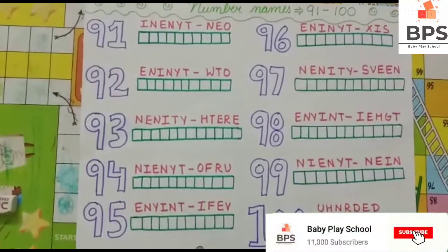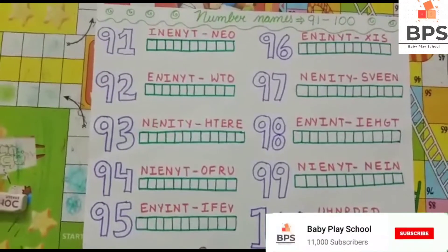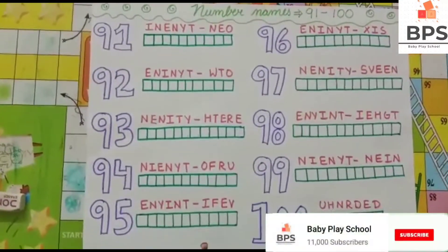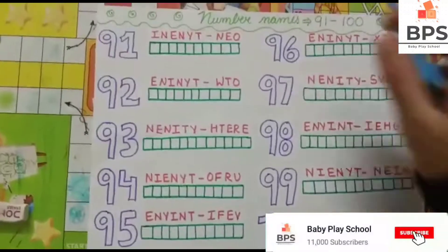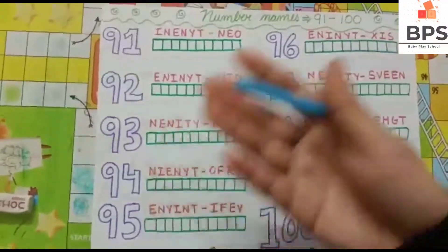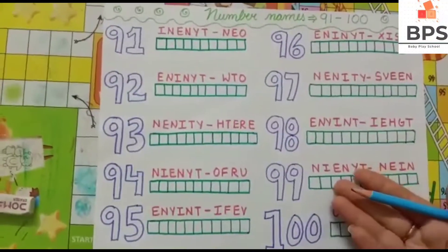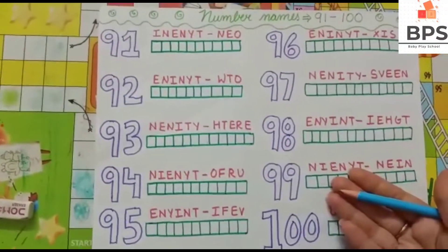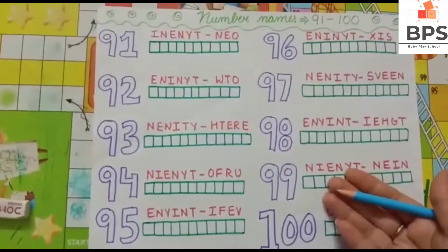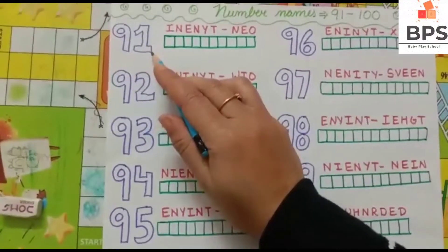Hello everyone, welcome back to our channel Baby Play School. Today we will learn the number names 91 to 100. Here is the worksheet — you can make a worksheet like this and do the worksheet.